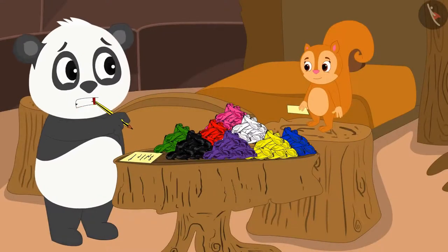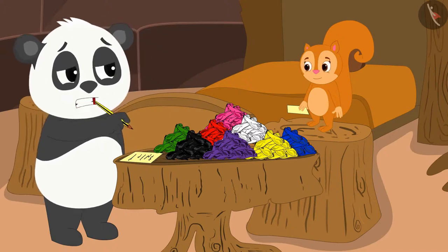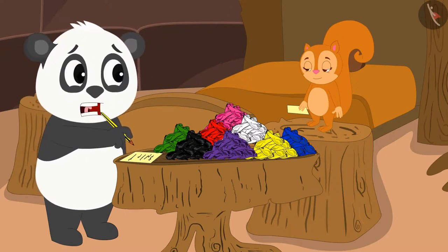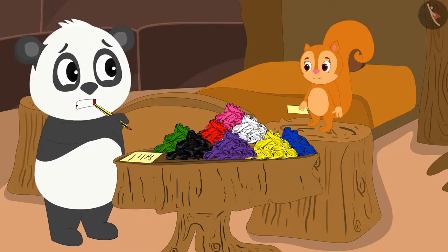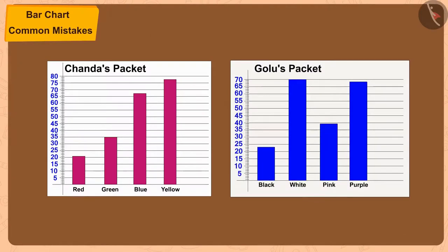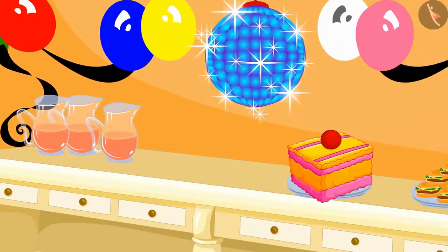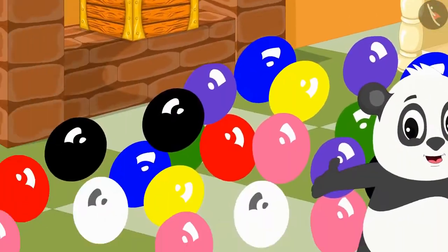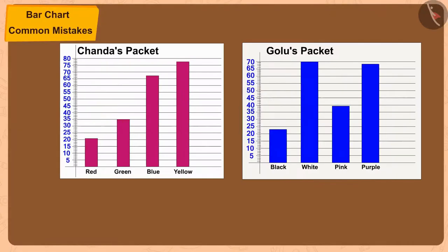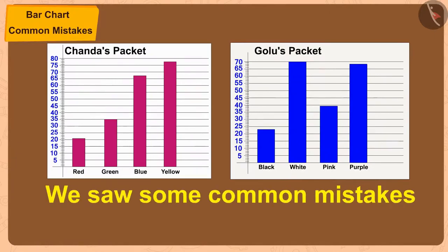Golu says he understood his mistake and that from now on, before making a bar chart, he will decide the scale first and only then start making it. Chanda and Golu made their bar charts and used that information to decorate Bhola's house with beautiful balloon patterns for his birthday. In this video, we saw some common mistakes related to bar charts.